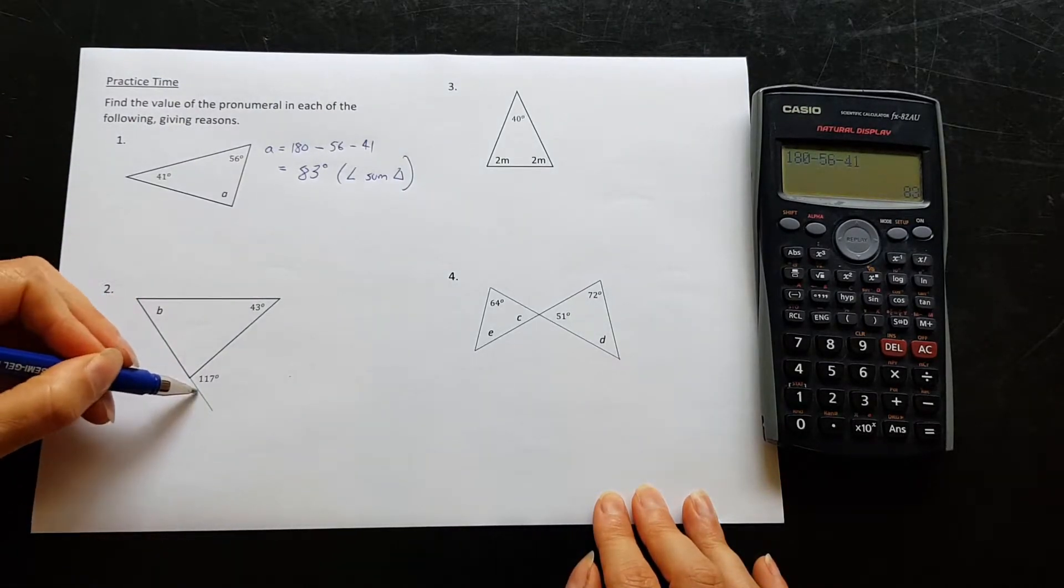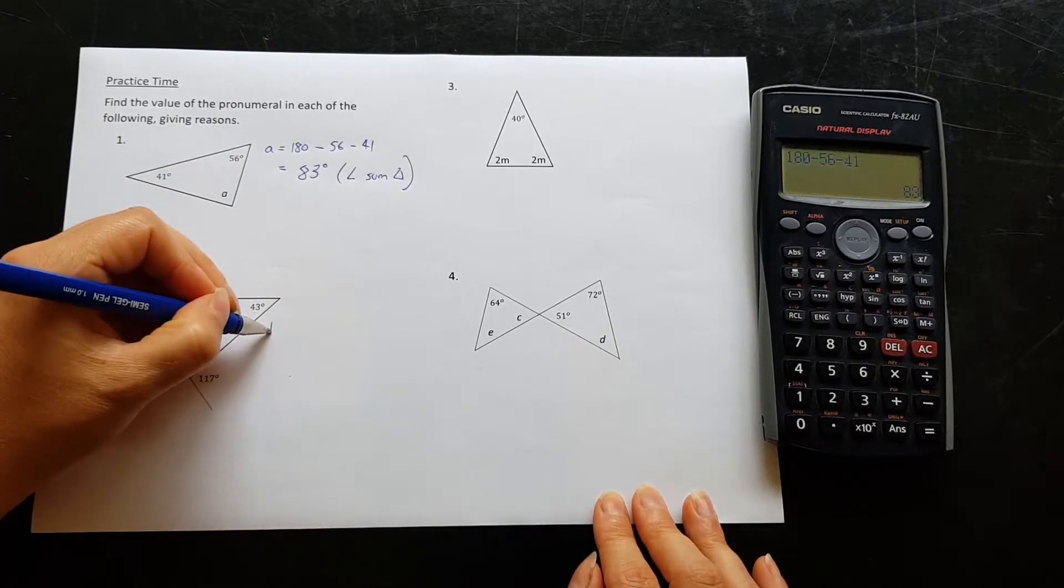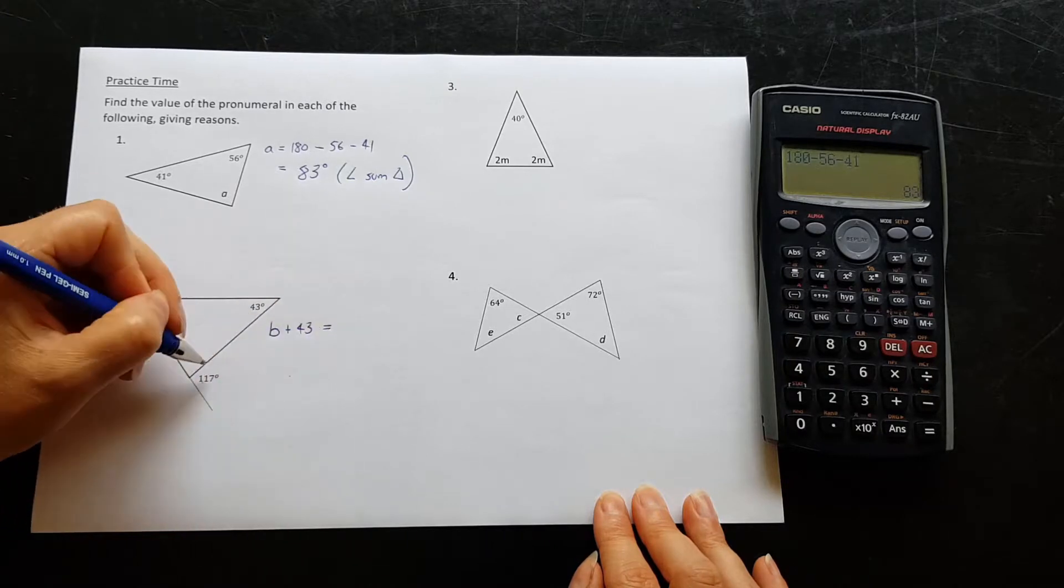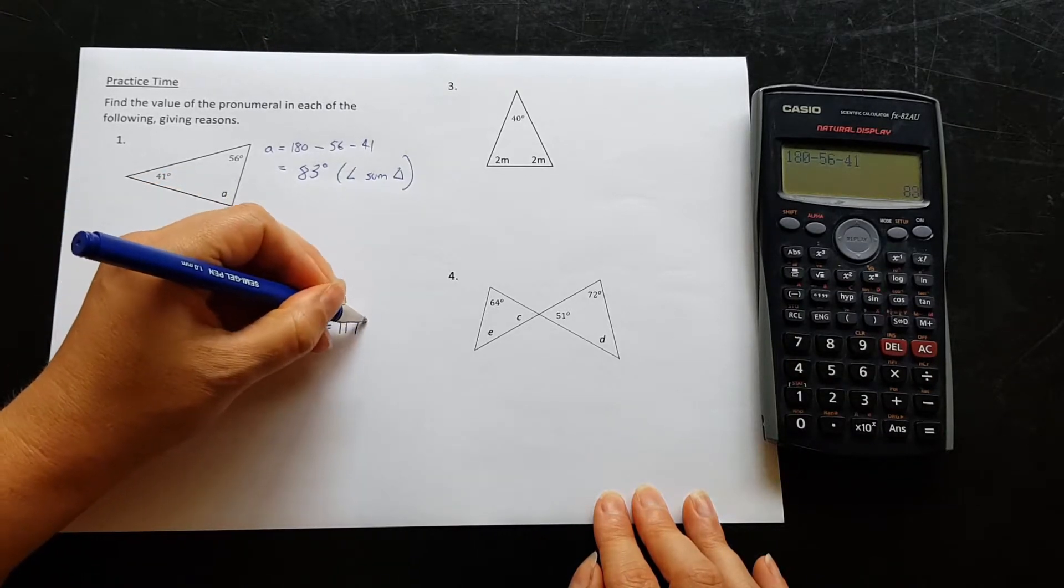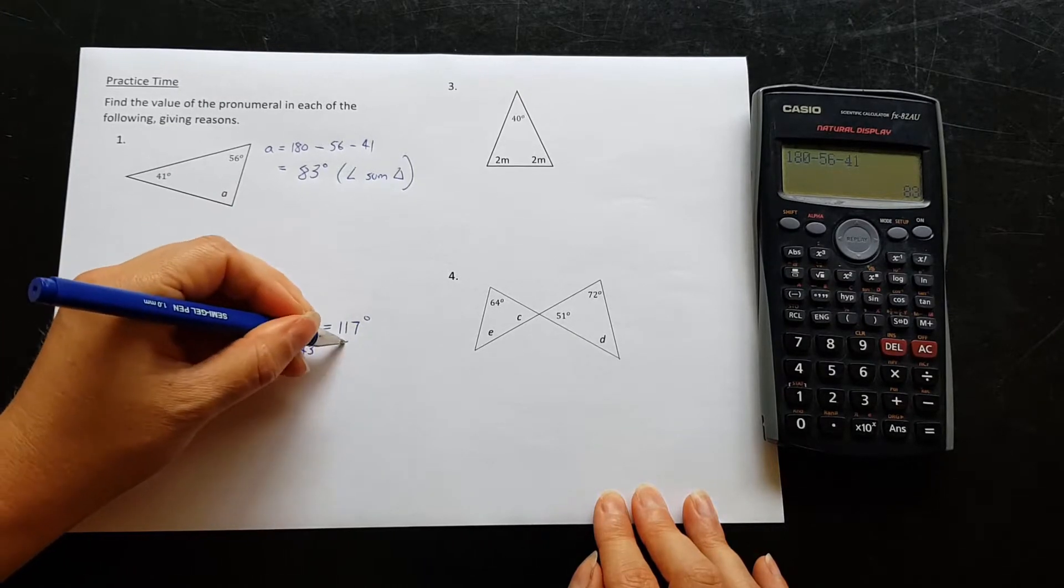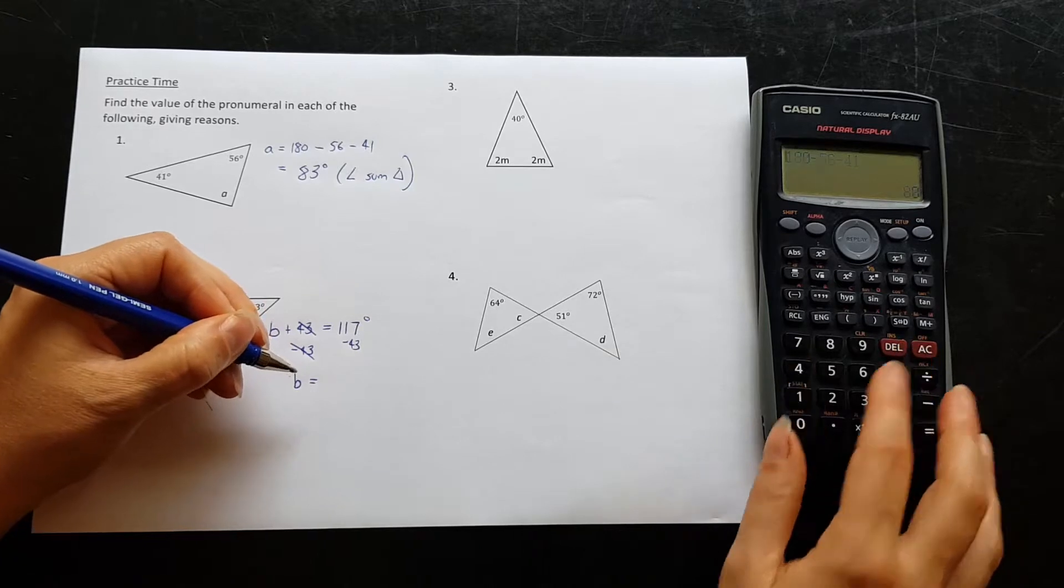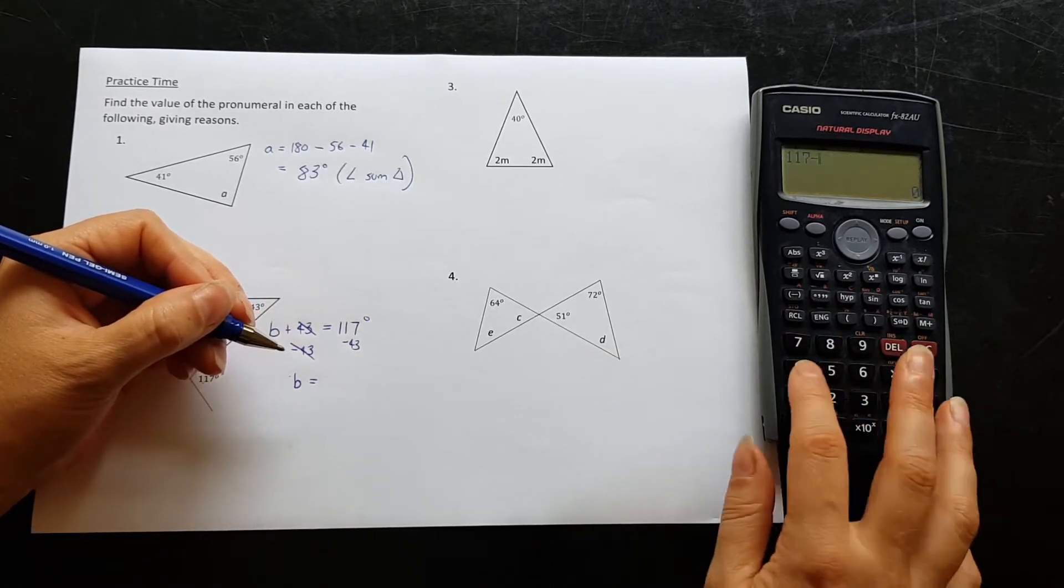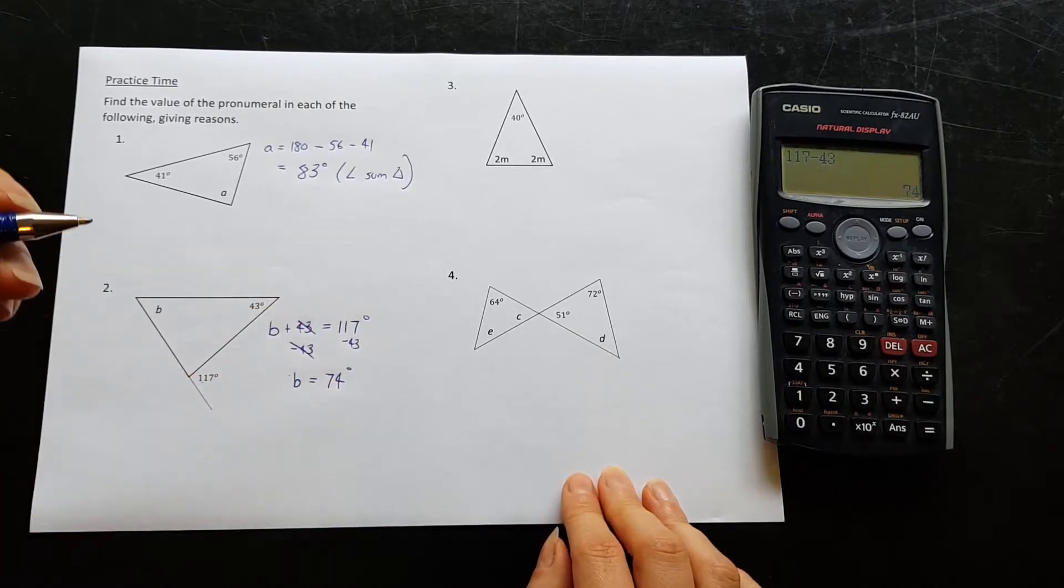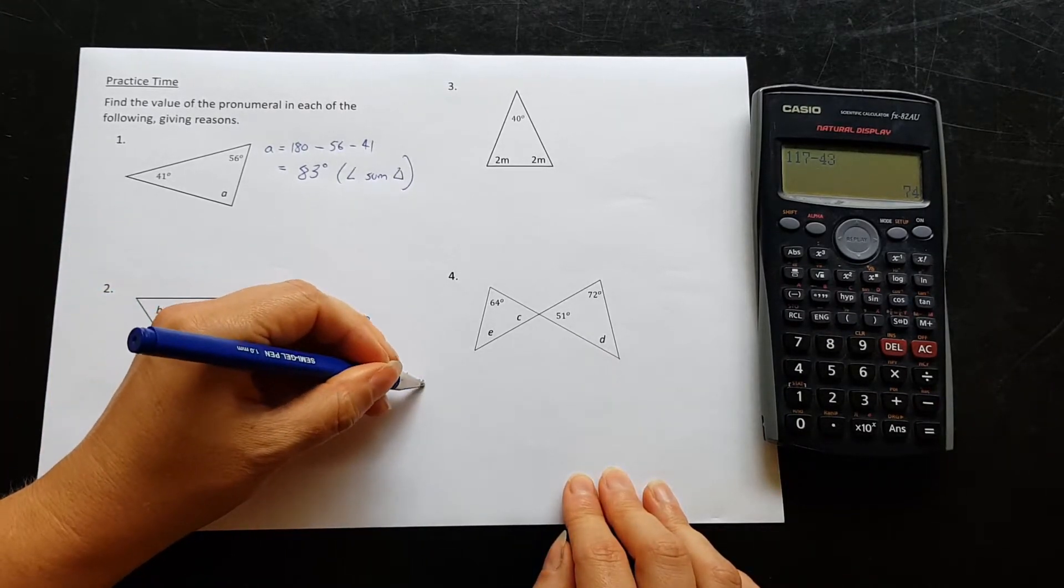Question two, we have an exterior angle down here. It will be equal to these angles added together, so we can write b plus 43 is equal to 117 degrees. We want the b by itself, so subtract the 43 away. So 117 minus 43 is equal to 74 degrees, and that was the exterior angle rule.